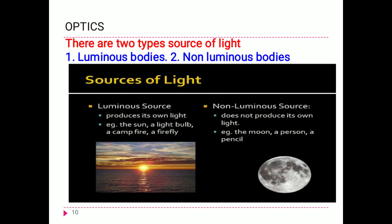There are two types of sources: one is a luminous source and another is a non-luminous source. Luminous bodies are those which produce their own light. For example, sun, bulb, campfire, and candle — all these things are luminous sources.